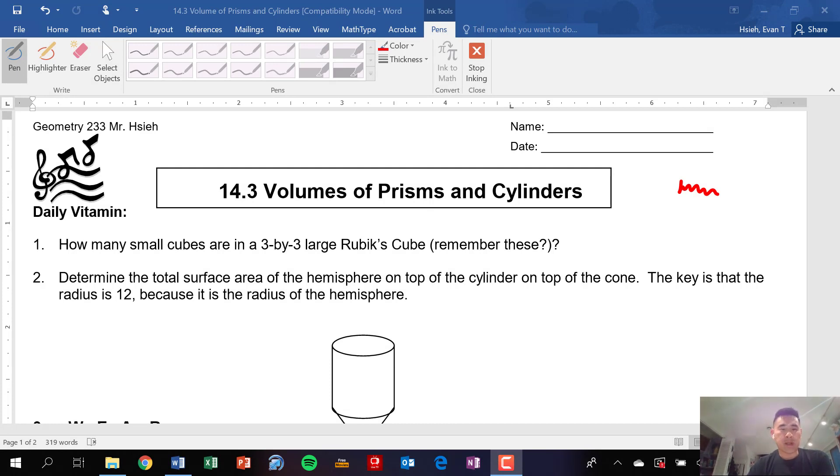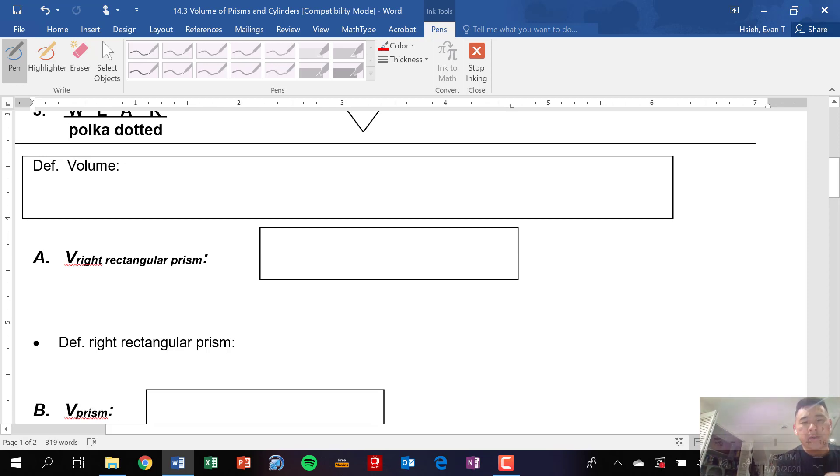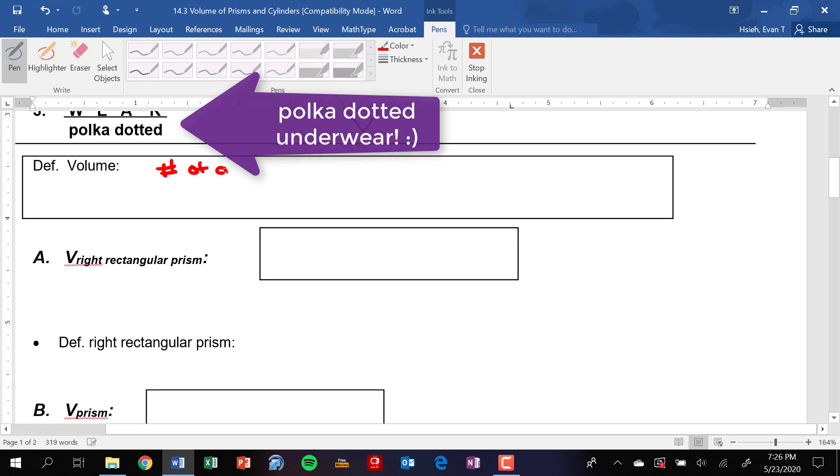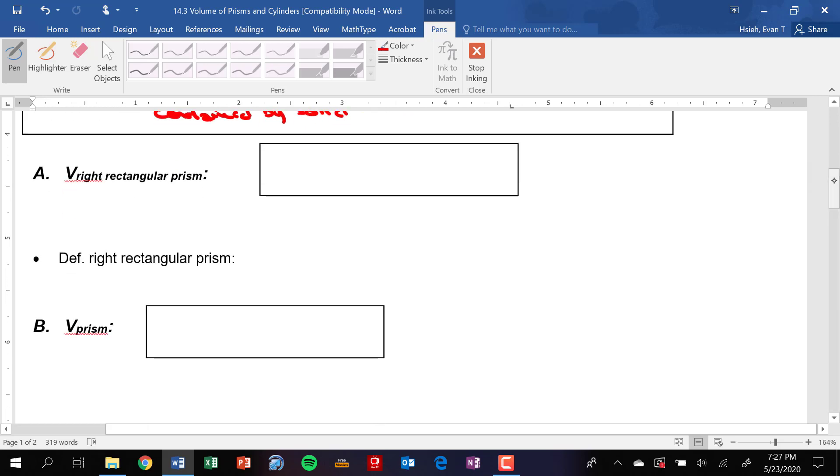All right, we're moving on to the volume section of the chapter, section 14.3. We just moved on from the surface area stuff and now we're going to talk about volumes. So let's start by defining what volume actually is. The definition of volume is basically the number of cubic units of space contained by a solid, or another way of thinking about it is the amount of space that an object occupies. I think most of you already know what volume is, but that's just a definition for you.